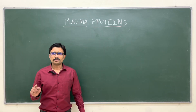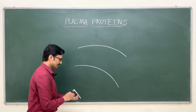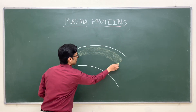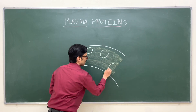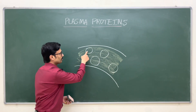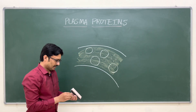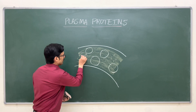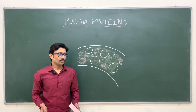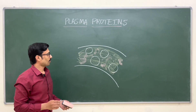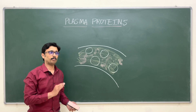Let us start with what are plasma proteins. Blood is made up of a water component — that is the plasma — and cells. Red blood cells, white blood cells, and platelets are present within the blood. The plasma is constituted by organic and inorganic water-soluble substances. The major water-soluble substances present in the plasma are proteinaceous substances — they are plasma proteins.